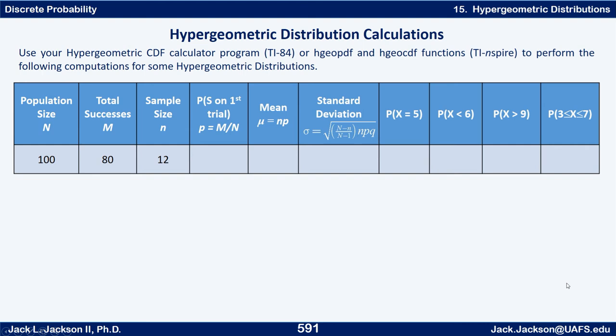All right here's another example. Now that you've seen that one you should be able to knock this one out pretty quickly on your own. I just changed the values of N, M, and n. Work this out. Press pause. Come back when you have an answer.